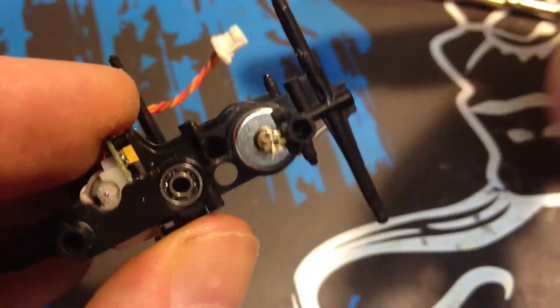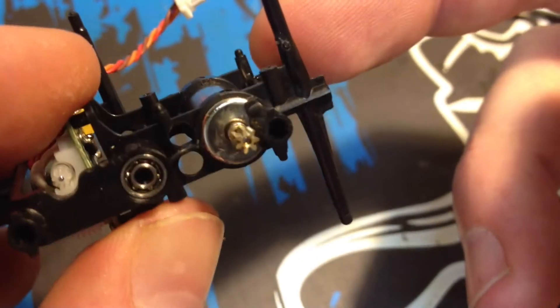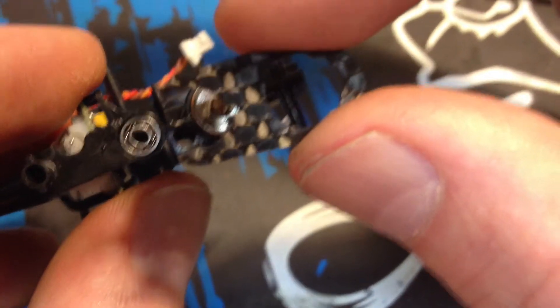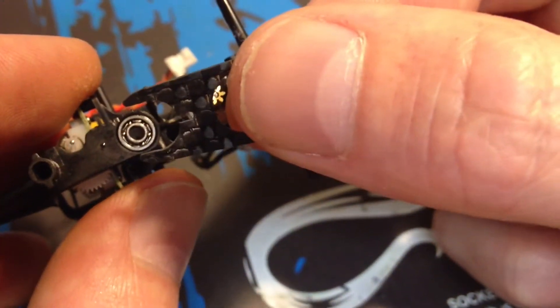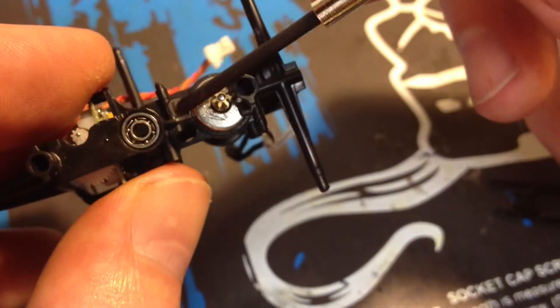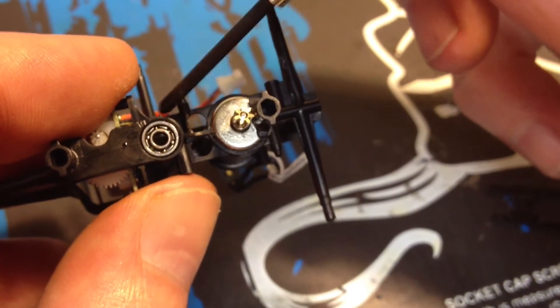Alright guys, so as per the instructions, we've installed the stock motor back into the frame. The next step is to glue this little piece in place. Obviously we're going to sand down the surfaces and we're going to apply glue around this little pillar where the main shaft goes.